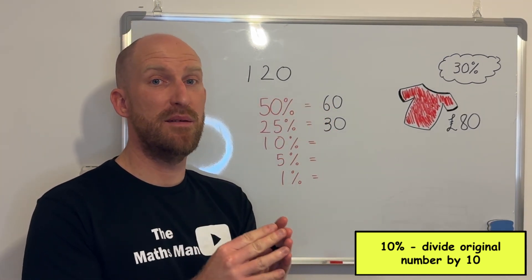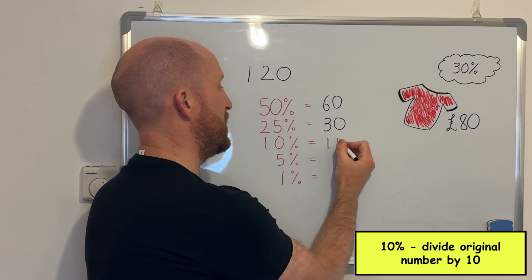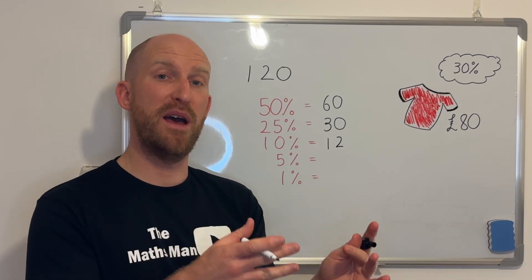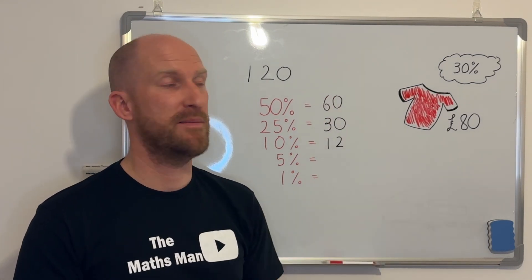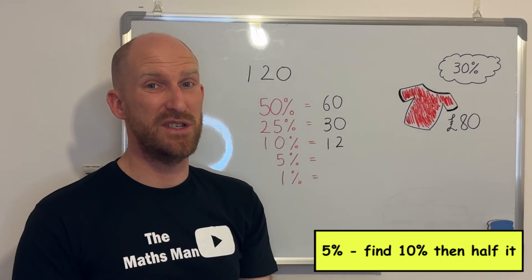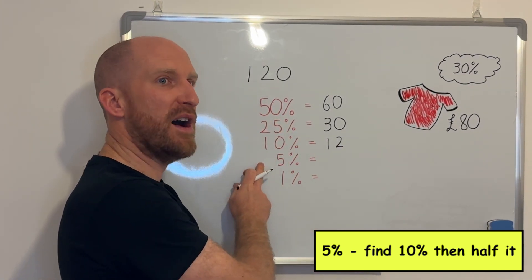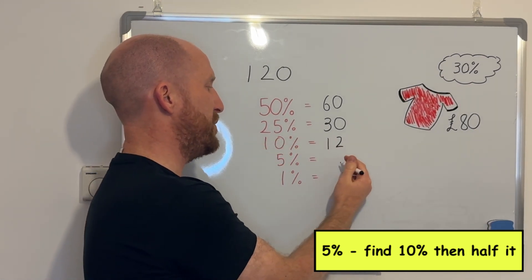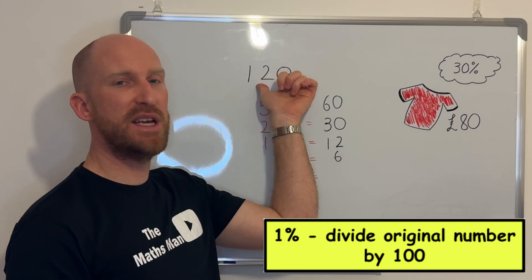To find 10% of a number, you take the original number and divide it by 10, so 120 divided by 10 is 12. If you are unable to divide by 10, 100, or 1000, I've made a video for that and I'll link it at the top of the screen. To find 5%, you can either divide the number by 20, or you can find 10% and then half that answer, because 5 is half of 10. So 10% is 12, therefore 5% is 6.